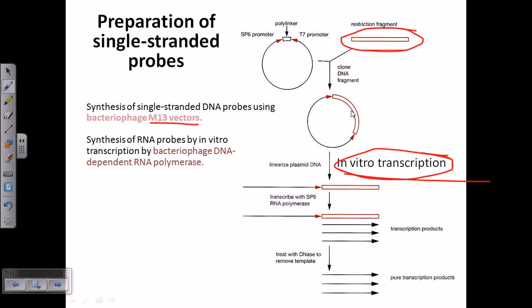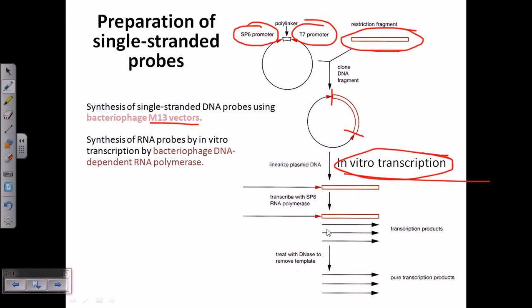After insertion, we use a restriction enzyme to cut and linearize the plasmid. This linearized plasmid is then transcribed using SP6 RNA polymerase. The polylinker region is flanked by both a T7 promoter and an SP6 promoter. When we substitute the polylinker with our restriction fragment, the desired fragment is flanked by both promoters. If we cut from the T7 promoter side, the SP6 promoter remains intact and we use SP6 RNA polymerase. If we cut from the SP6 promoter side, the T7 promoter is intact and we use T7 polymerase.